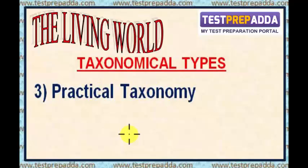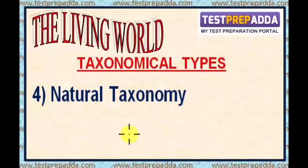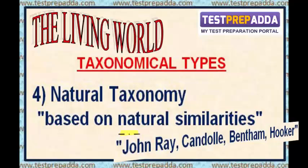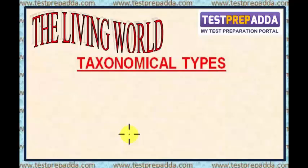Third, Practical taxonomy: this system was based on the utility of organisms. Fourth, Natural taxonomy: this is based on natural similarities amongst organisms. This classification was given by John Ray, and later on by Kendall, Bentham, and Hooker.